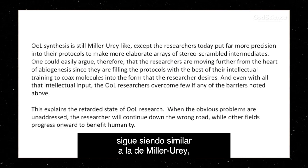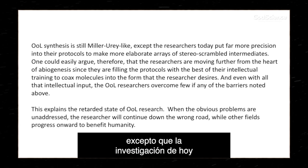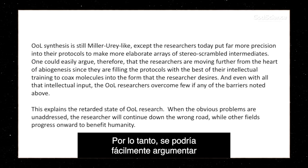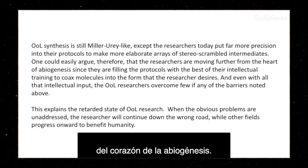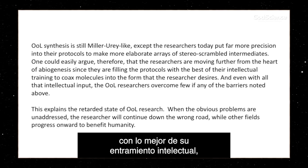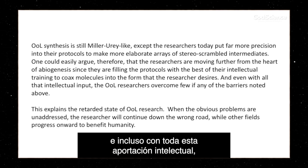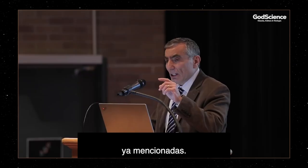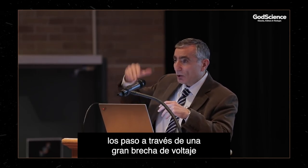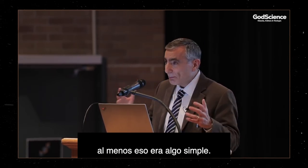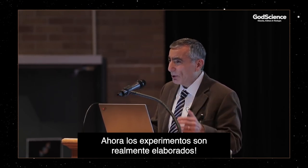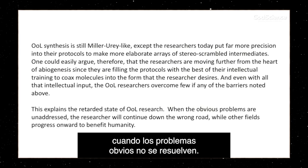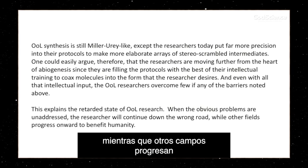Origin of life synthesis is still Miller-Urey-like, where you just make a bunch of compounds and claim you've done something, except that the research today has put far more precision into the protocols to make more elaborate arrays of stereo-scrambled intermediates. One could argue therefore that the researchers are moving further from the heart of abiogenesis, since they are filling the protocols with the best of their intellectual training to coax molecules into the form that the researcher desires — and even with all that intellectual input, origin of life researchers overcome few, if any, of the barriers noted. This explains the retarded state of origin of life research.